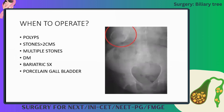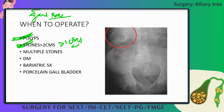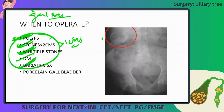Indications for operating on gallstones: stone size more than 2 cm is the classic indication, though some now operate for stones more than 1 cm. Other indications include polyps, multiple stones, diabetes, and planned bariatric surgery — all are indications for cholecystectomy.